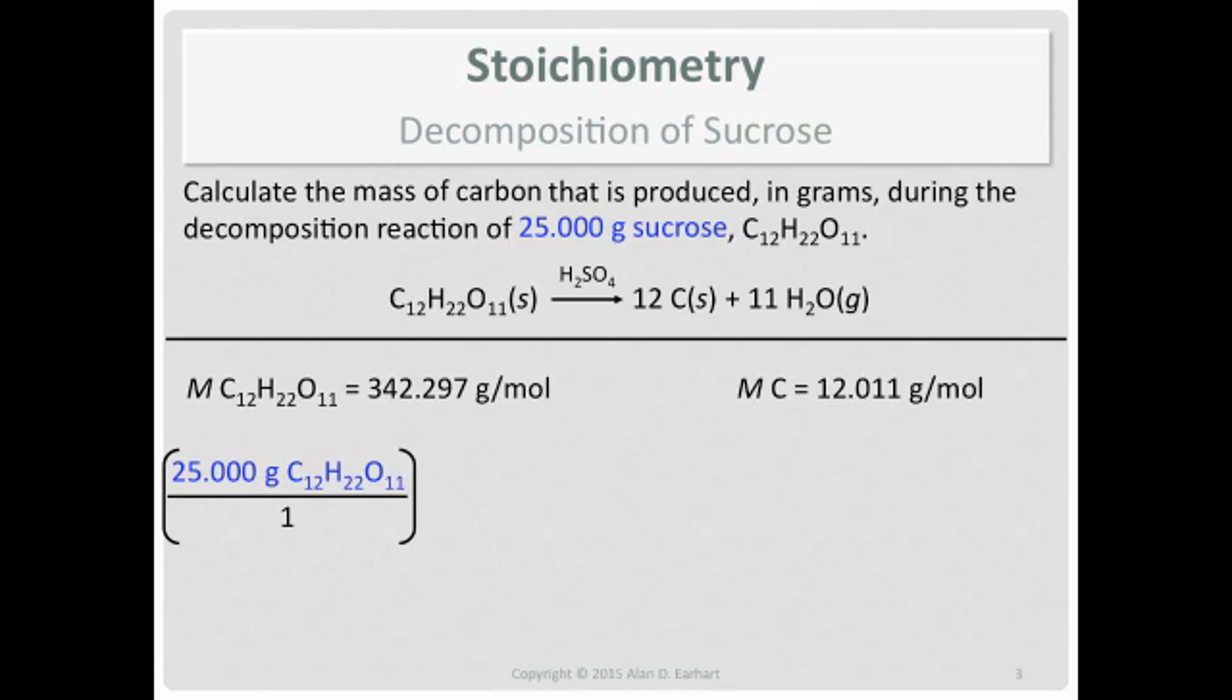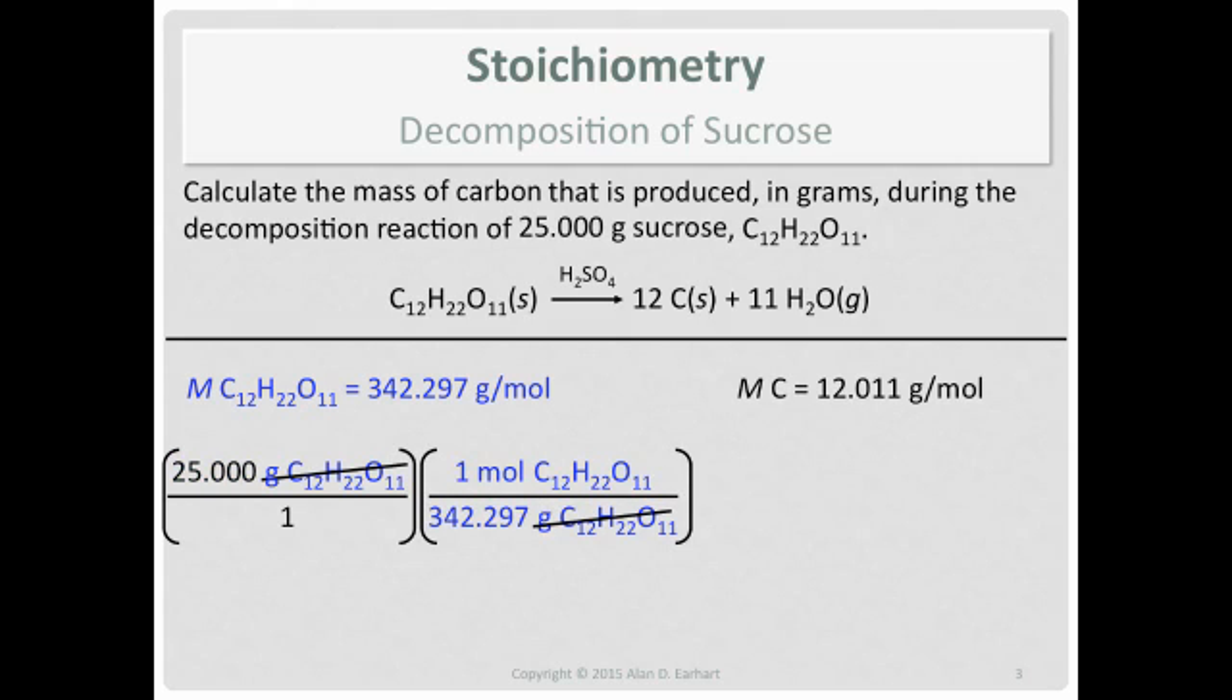In the stoichiometry calculation, the sucrose becomes part of the unit. That's because we're going from sucrose to carbon, and when you switch from one substance to another, the units become more complicated. What can you do in one step? Convert to moles using the molar mass. Are we going to do grams over moles or moles over grams? Moles over grams to make our units work, and the grams of sucrose cancel.